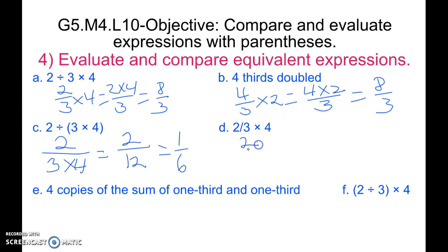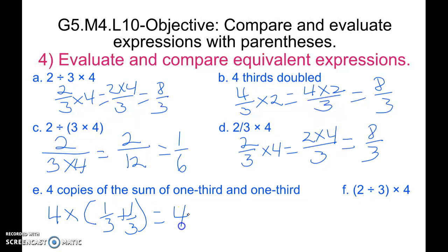D, 2 thirds times 4 equals 2 times 4 over 3, again equals 8 thirds. E, 4 copies, that would be like 4 times the sum of 1/3 and 1/3. We're asked to find 4 times the sum of 1/3 plus 1/3, which is going to equal 4 times 2 thirds, which we have already solved several times, equals 8 thirds.